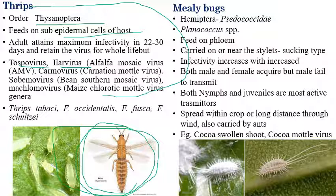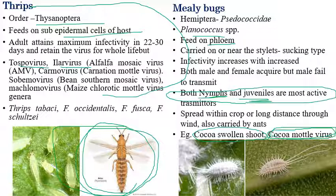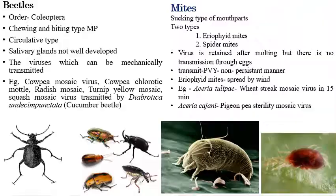Mealybug belongs to Homoptera. The main species involved in transmitting plant viral diseases is Planococcus species. Mealybugs mainly feed on phloem. Both nymphs and juveniles are the most active stages in transmitting viral diseases. An important example is cocoa swollen shoot virus transmitted by mealybug, and banana streak virus is also transmitted by mealybug.